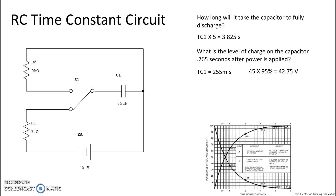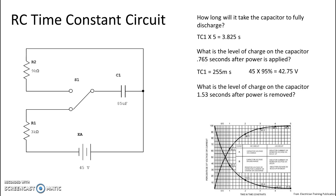Let's do another one. What is the level of charge on the capacitor 1.53 seconds after power is removed? Similar question, but now we're looking at after power is removed, so we're on the discharge path. When figuring out time constant one, we use R2 which is 9k and C1 which is 85 micro.